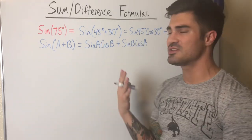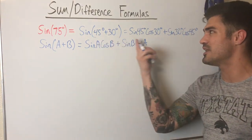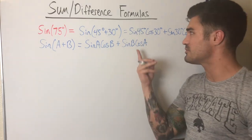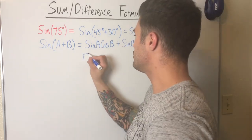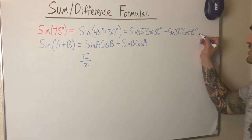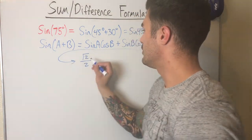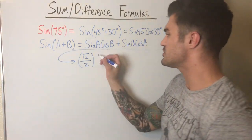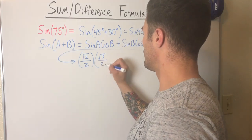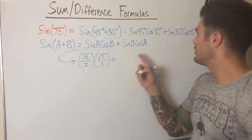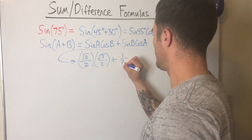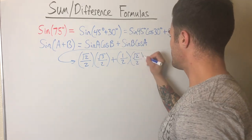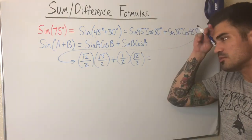Now I just copy down the values from the unit circle. Sine of 45 is root 2 over 2, cosine of 30 is root 3 over 2, sine of 30 is 1/2, and cosine of 45 is root 2 over 2. That's why I picked these two angles — I know all their sine and cosine values.